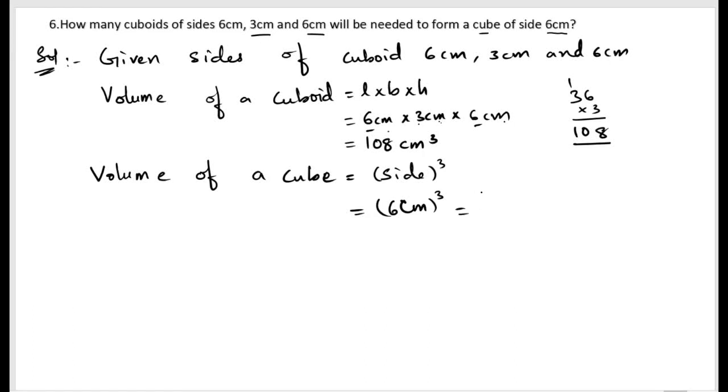The cube of 6: 6 × 6 = 36, 36 × 6 = 216 cm³, or cubic centimeters.